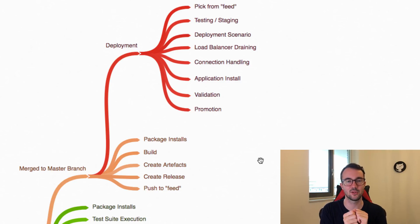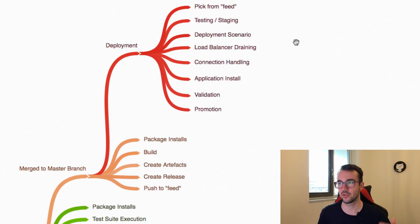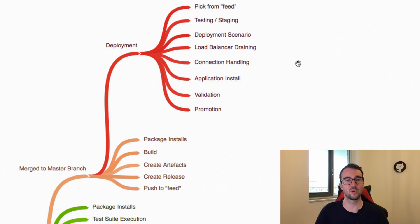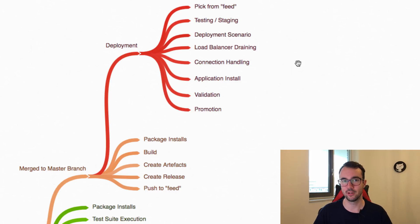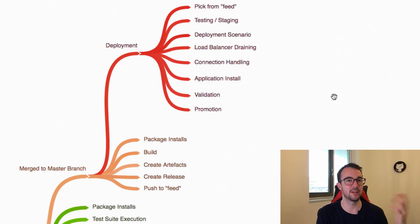Once it's been merged and everything is sorted — versioned and zipped — it gets pushed somewhere a deployment tool can pick it up. The deployment handles things like load balancer draining, connection handling, the actual application install, and what needs to run at the OS layer. This is in a staging or testing environment, which is really important — we always deploy to staging or testing first to get feedback before we talk about promotion to acceptance or production.